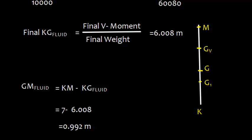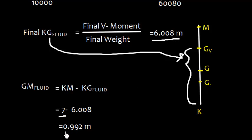KG fluid, this is the final center of gravity. The GM fluid is KM, which we had taken as 7 meter, minus 6.008, which is this value. So we get the value as 0.992 meters.